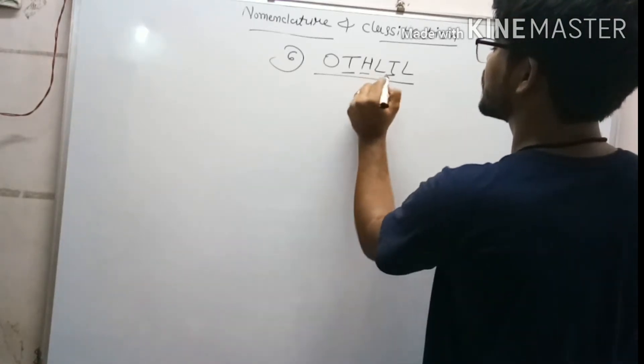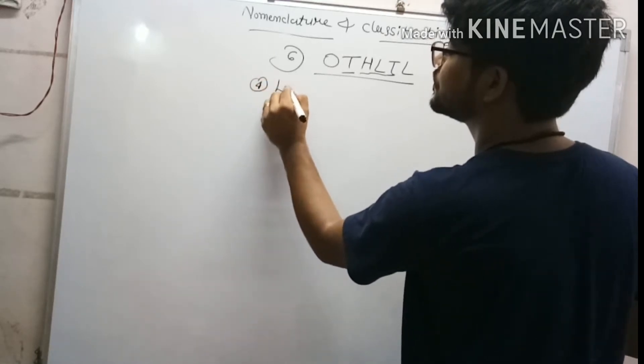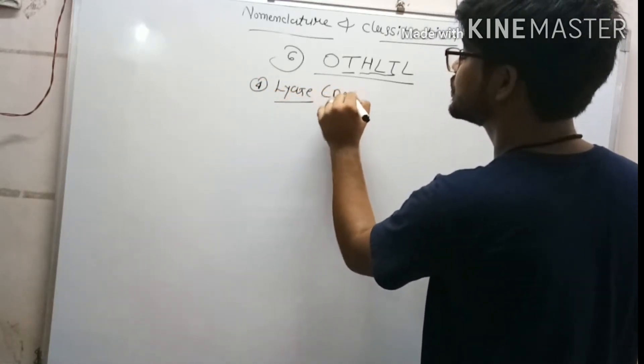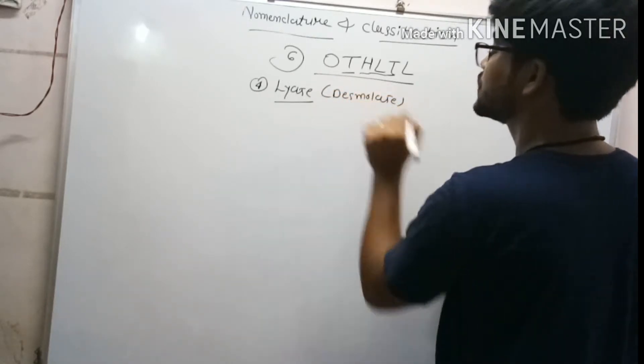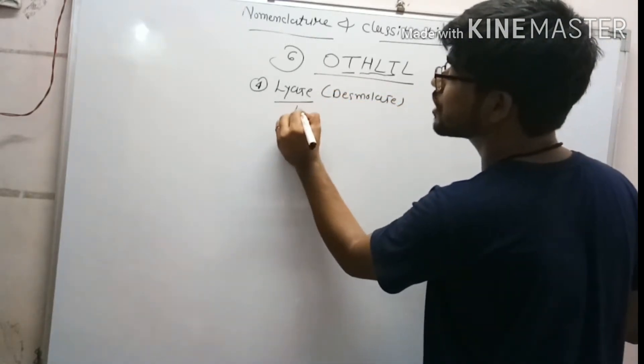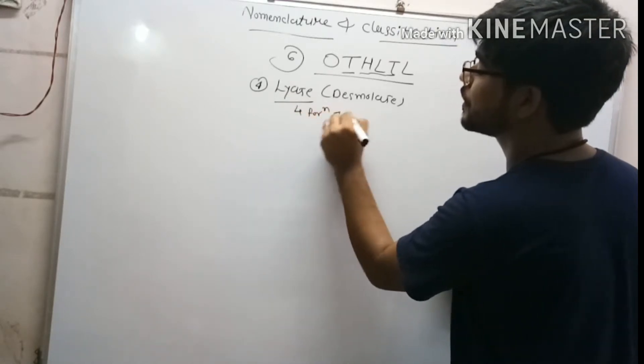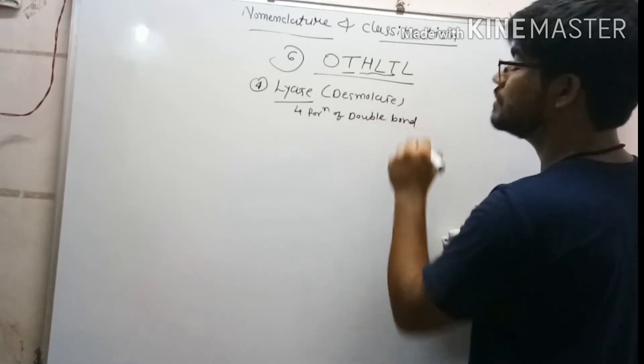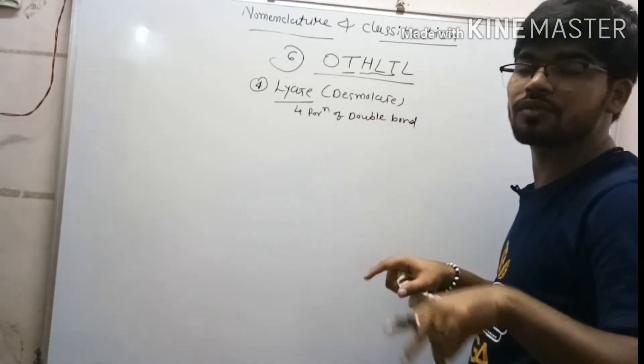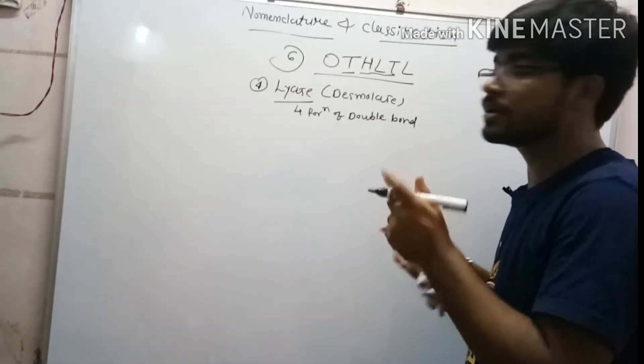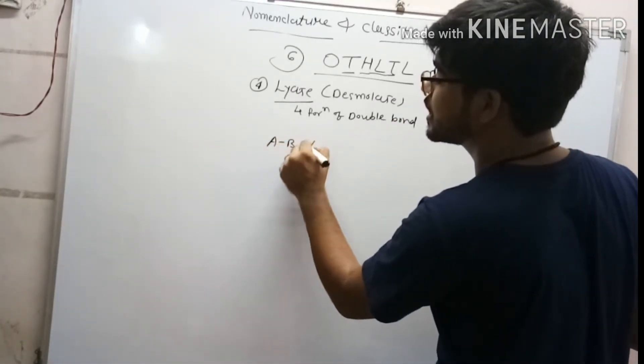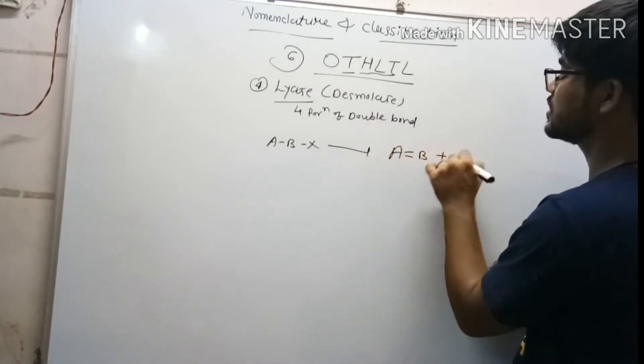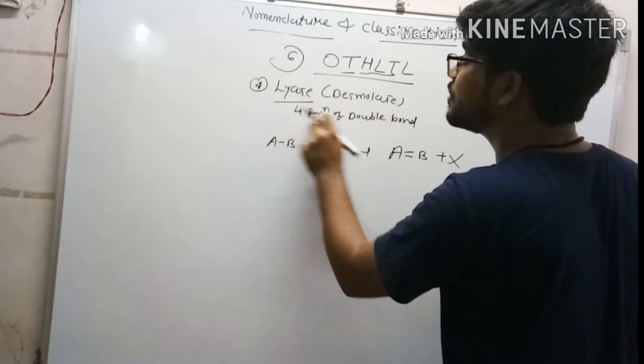The fourth one is lyase. It is also known as desmolase. Now, what lyase does? Lyase does formation of double bond, means it cleaves one bond or removes one substrate or one group from one side. It forms a double bond, like A is connected with B and X. What it will do? A double bond B and X is removed.